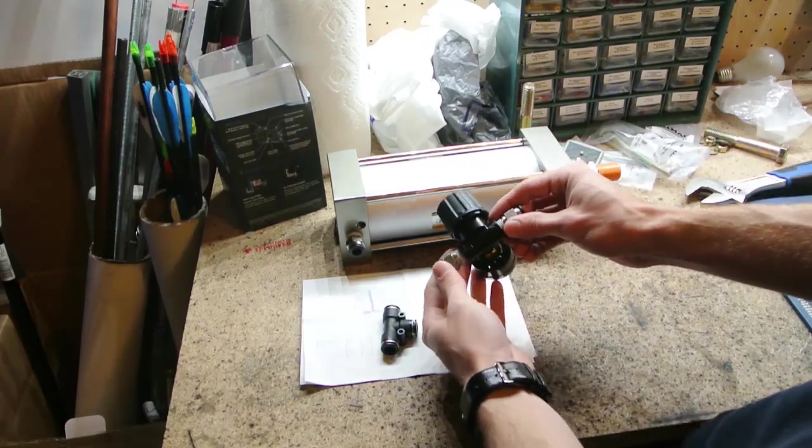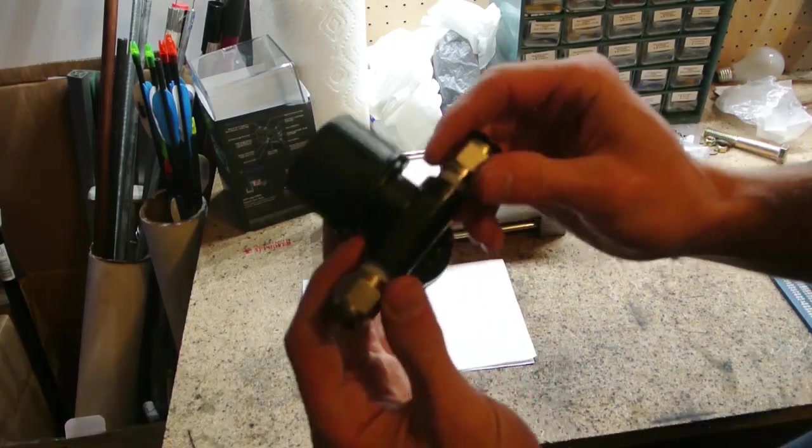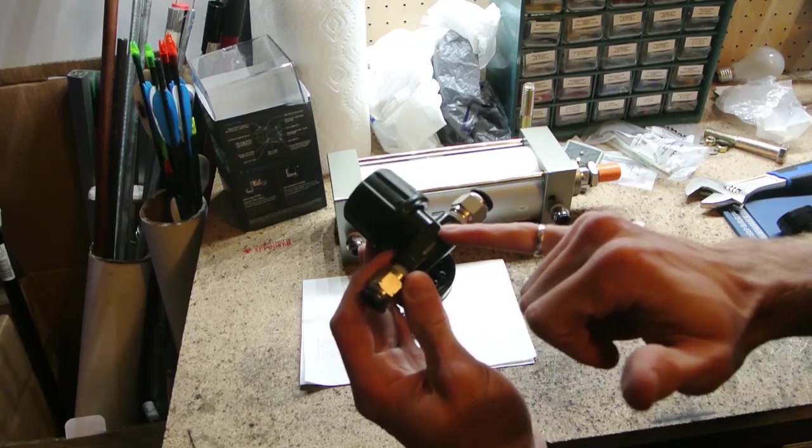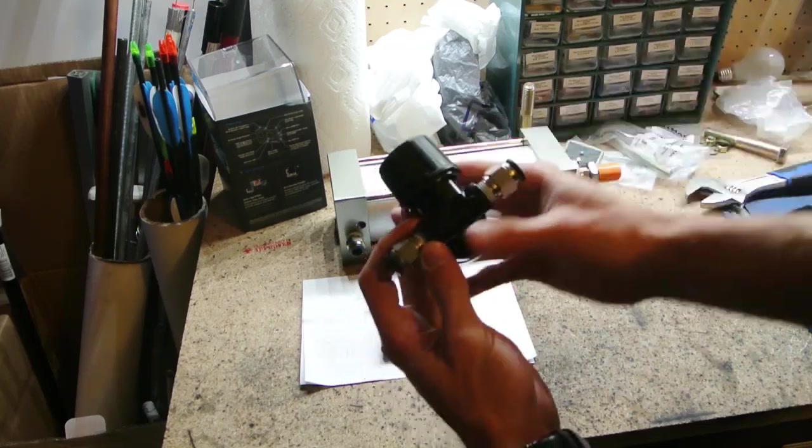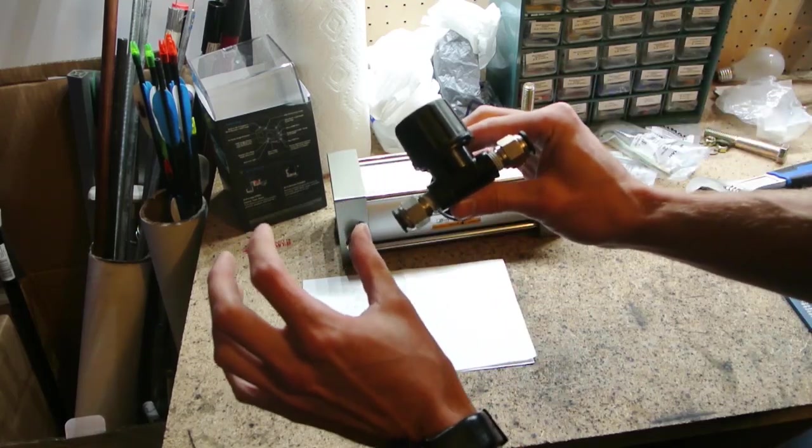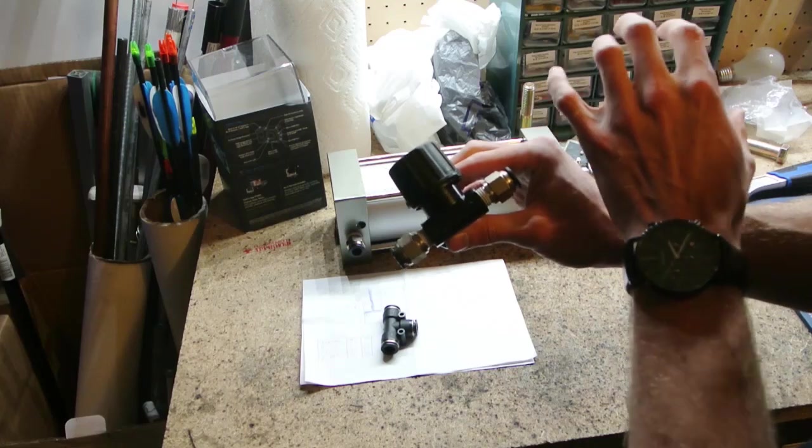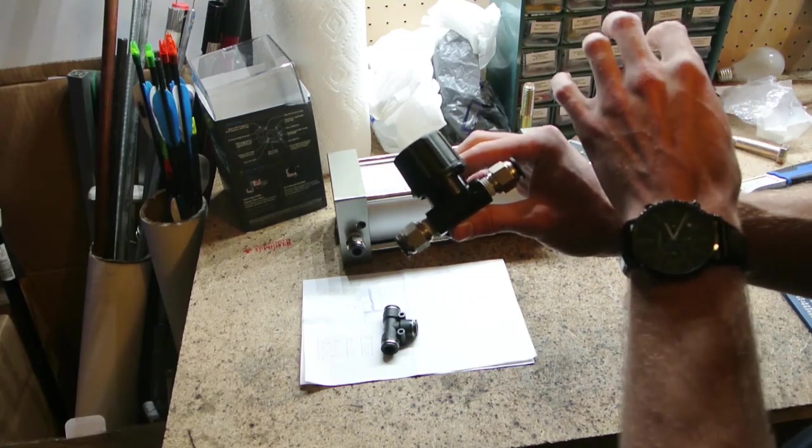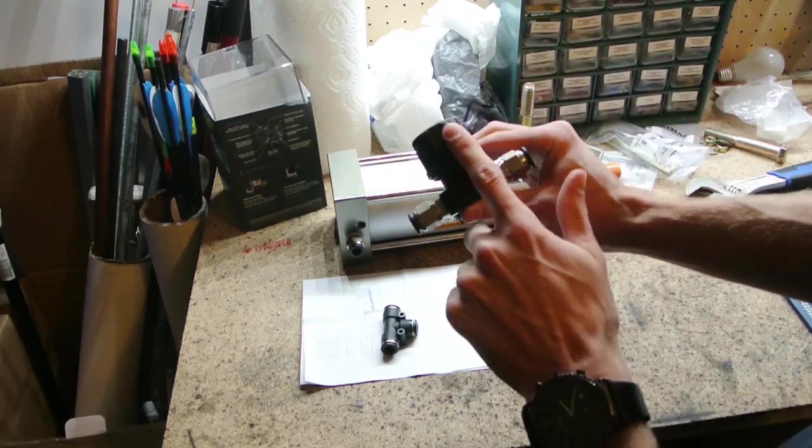So pressure regulators are flow directional. That means this actually has an exhaust in it to reduce the pressure. So the tank pressure will always stay the same. It's controlling the pressure on the other side. So if you want to relieve that pressure, it actually exhausts some of the air out of this.